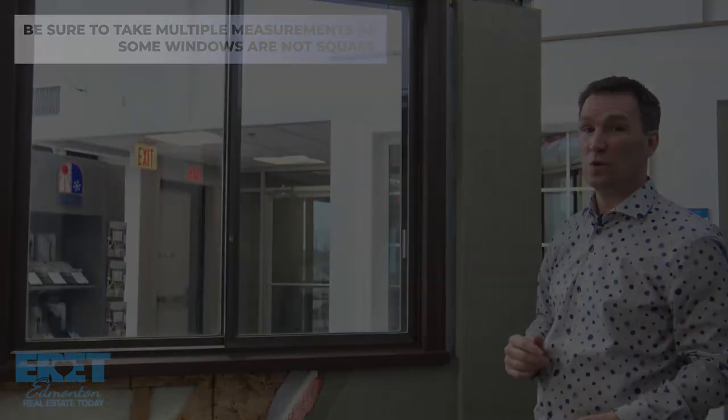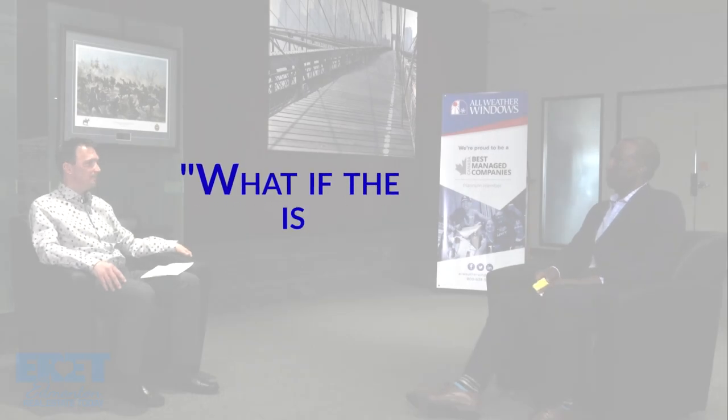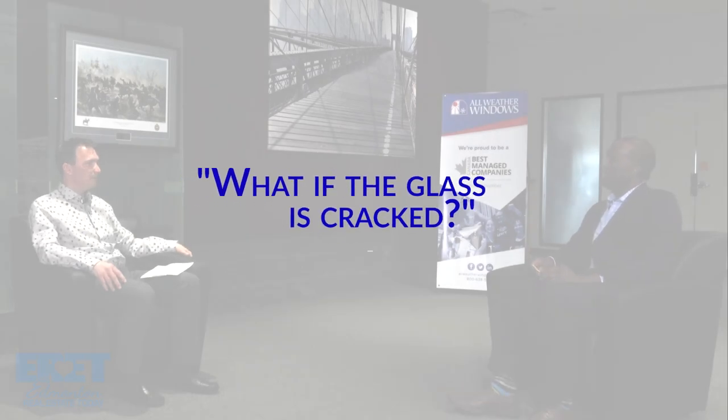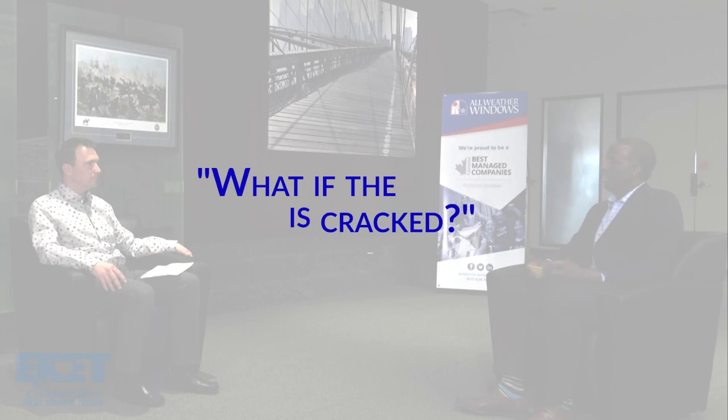What steps should I take in order to replace the glass or the window? If you're looking at your window and it's cracked, you would find the manufacturer markings and call your manufacturer. If you don't know who that is, you can easily call us — we would come out, take a look at the window, measure it, find out what's needed, and order a new sealed unit without having to replace the whole window frame.